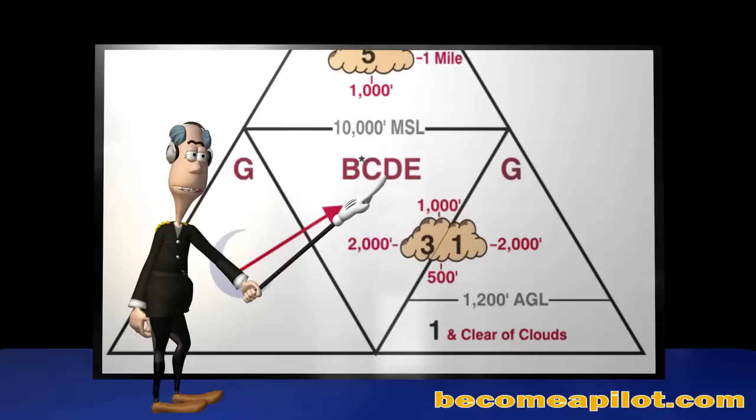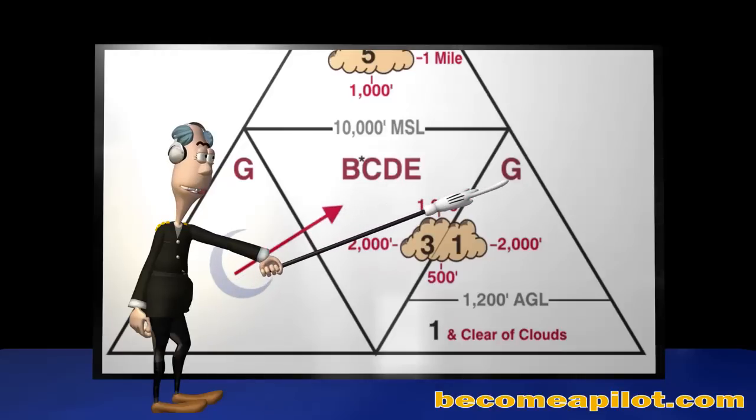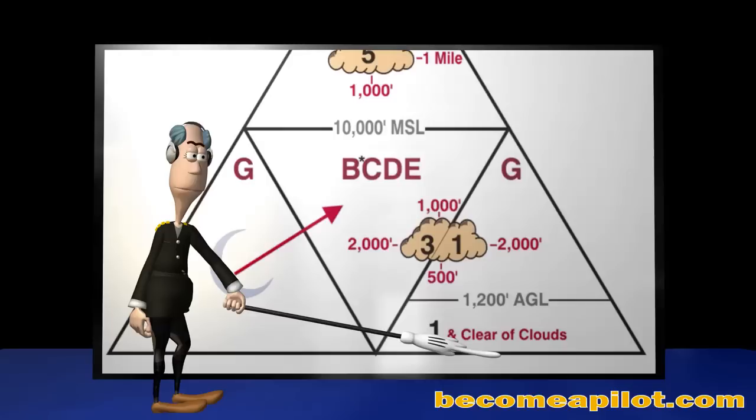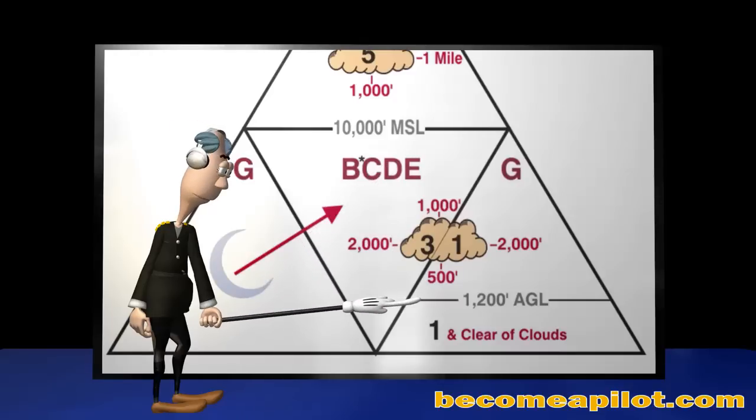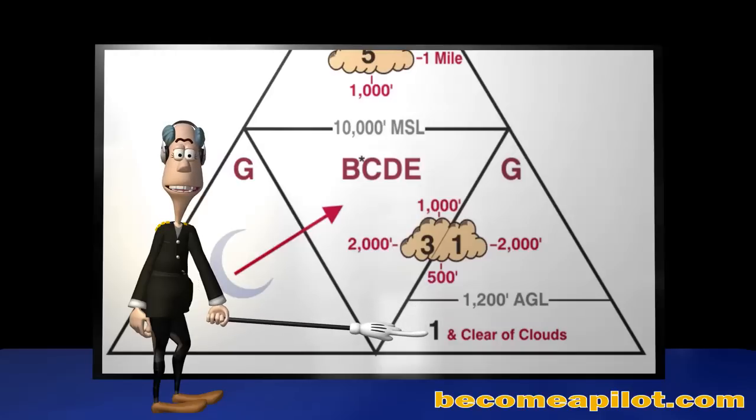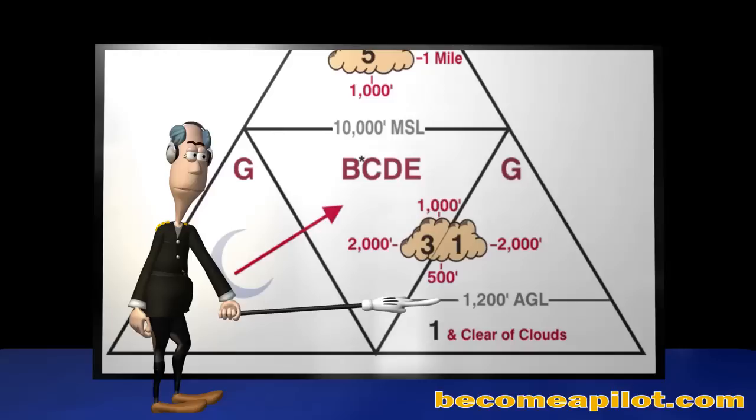The bottom right pyramid represents Class G or uncontrolled airspace from the surface up to, but not including, 10,000 feet MSL. A horizontal line one-third up this triangle identifies the altitude from the surface up to 1,200 feet above ground level. Now, from the surface up to 1,200 feet above ground level, you are required to have one-mile visibility and remain clear of all clouds.